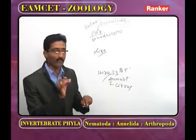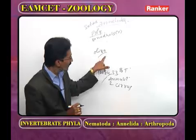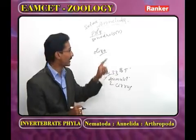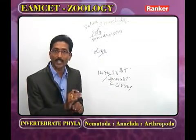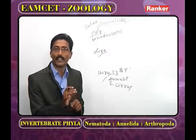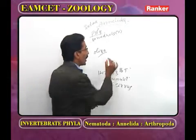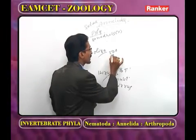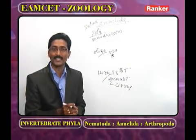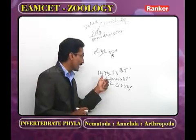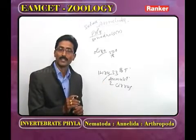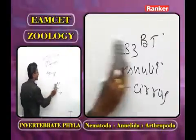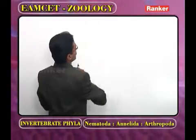One exception in Oligochaeta is Tubifex, which lives in fresh water. The largest earthworm is Megascolides; the smallest is Chaetogaster. In South India, the longest earthworm is Drawida. The commonly discussed species is Pheretima posthuma, with about 500 species worldwide and 18 in India. Examples of Hirudinea include Haemadipsa and Acanthobdella.